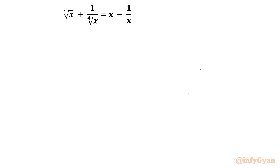Welcome back to Infigyan friends. In this very exciting video of Algebraic Challenging Equations, we are going to take up one radical equation challenging problem. The given problem is 4th root of x plus 1 over 4th root of x equal to x plus 1 over x. You can see there is one straight away solution that is x equal to 1, but we are here to find out all the complex solutions also.